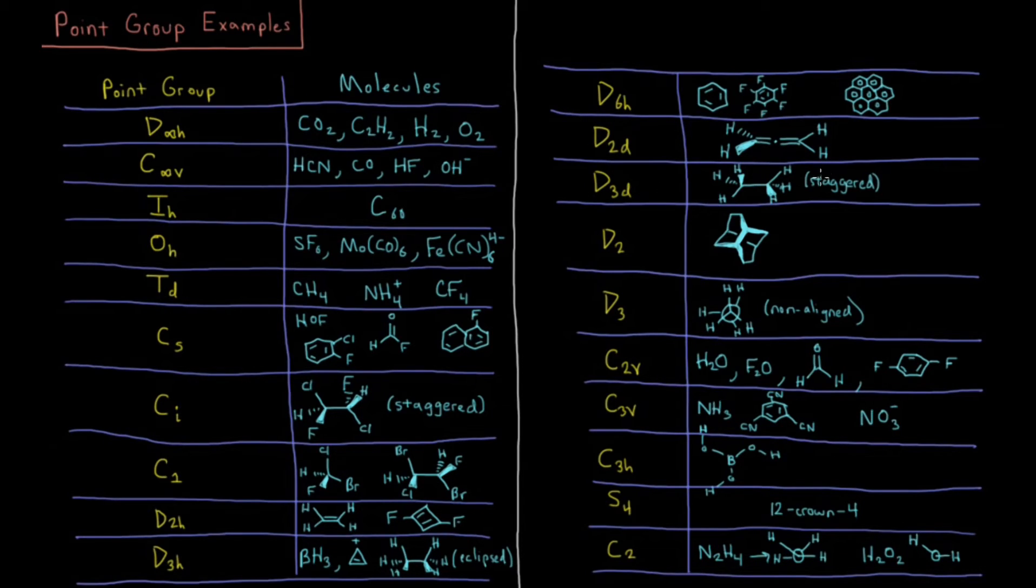Similarly, the staggered configuration of ethane is D3D. It's kind of like two triangles that you look at from the side, but they're staggered relative to one another. If you had two squares that were staggered relative to one another from the side, that would be D4D, pentagons for D5D, etc. You just kind of need to see that in 3D. I can't do a good job of describing that on two-dimensional paper.